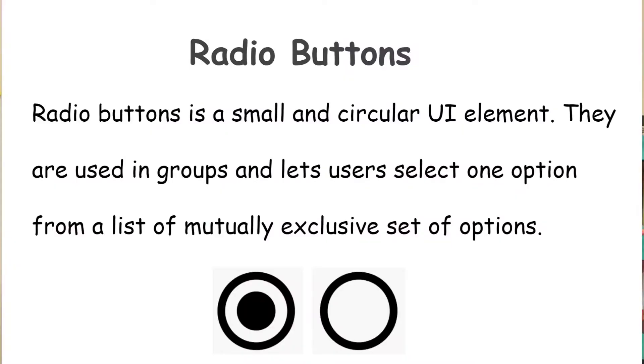Radio buttons are small and circular UI elements. They are used in groups and let users select one option from a list of mutually exclusive options. Radio buttons are often confused with checkboxes, but there is a difference. With checkboxes, you can select multiple options. However, with radio buttons, you can only select one option.